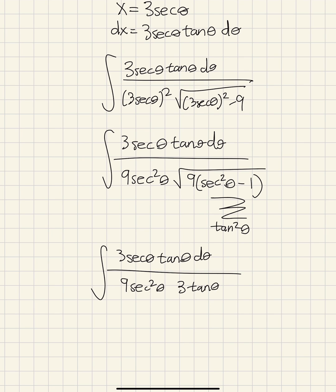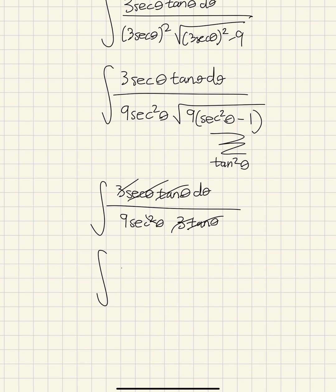Now we can start canceling. Tan theta tan theta, tan theta, 3, 3. And one of the secants cancels out. We're left with 1 over 9 secant theta d theta.